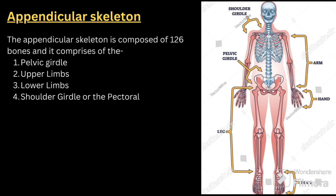Next comes the appendicular skeleton. The appendicular skeleton is composed of 126 bones and comprises four parts: first, the pelvic girdle; second, the upper limbs; third, the lower limbs; and fourth, the shoulder girdle or pectoral girdle. Write and keep these points so that they will be helpful for you.